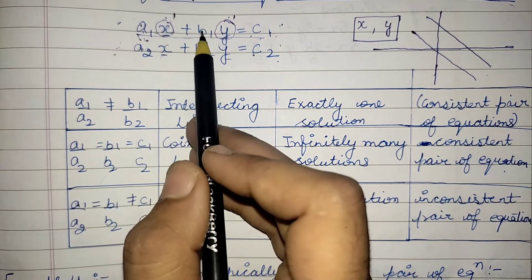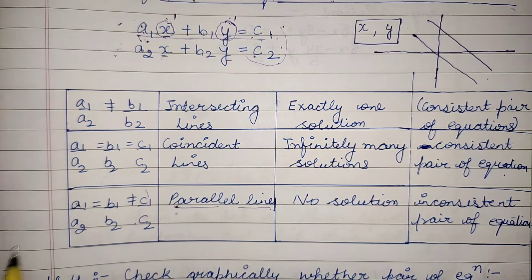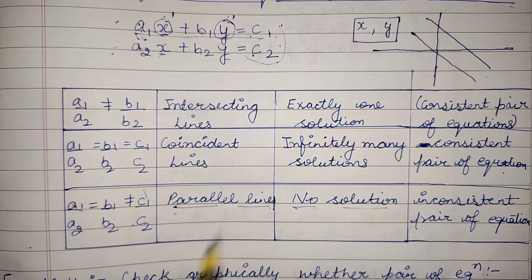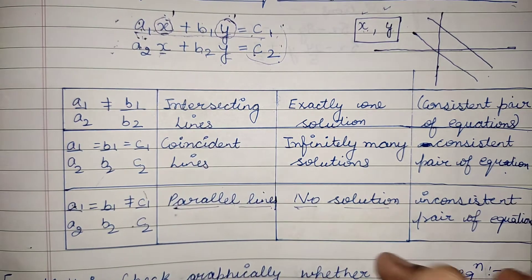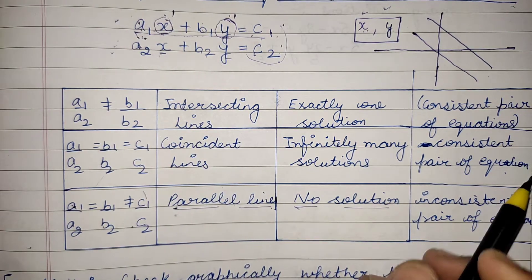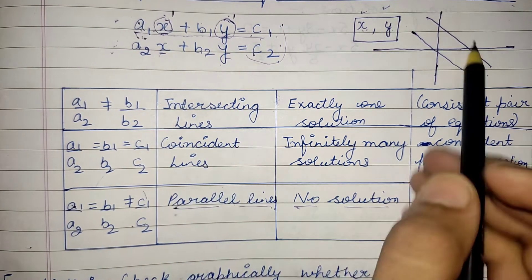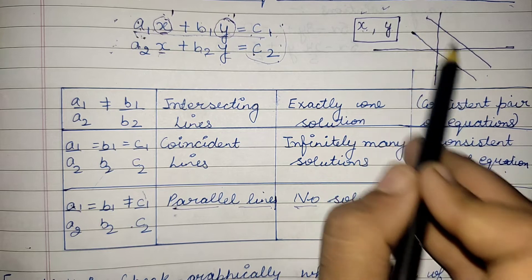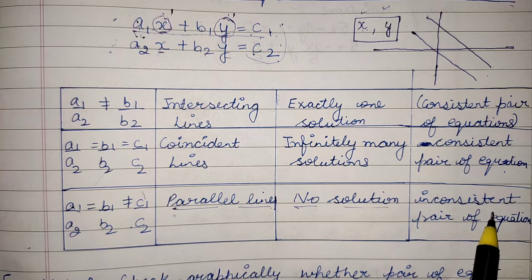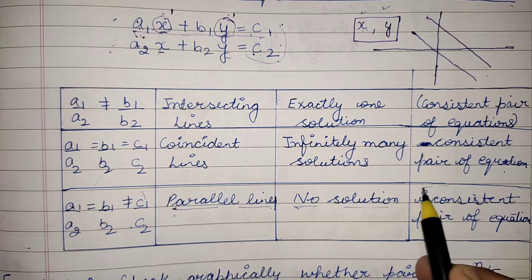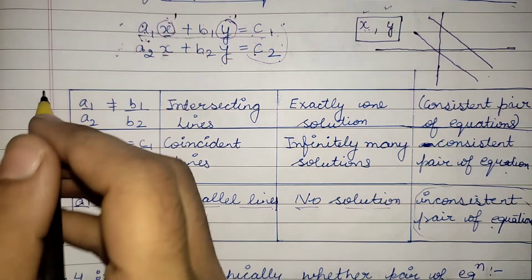If two lines are parallel to each other, the condition is: a1/a2 = b1/b2 but c1/c2 is not equal. There will be no solution — no such value of x and y that satisfies both equations. Both equations will have no common value of x and y. This kind of equation is called an inconsistent pair of equations.